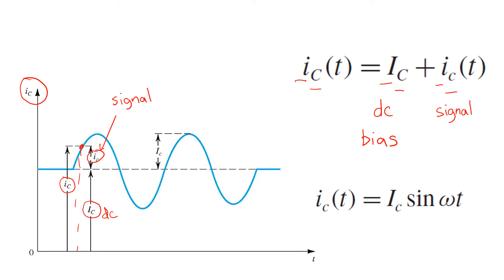One final convention to be aware of is that when the signal is composed of a sinusoid, we will refer to its amplitude with uppercase i and lowercase subscript c in this case. So IC refers just to the amplitude of the sinusoid.